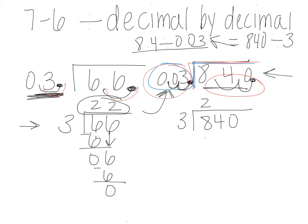3 goes into 8 two times which is 6. I'm gonna bring down my 4. 3 goes into 24 eight times which is exactly 24 and 3 cannot go into zero so I put a zero at the end to get my final answer of 280.